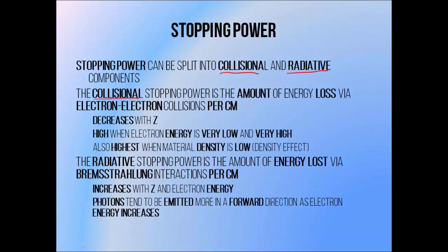The collisional stopping power is the amount of energy lost by interactions between electrons within the beam and electrons within the medium — so the amount of energy lost by hard and soft collisions. The collision stopping power tends to decrease with the material atomic number, and it tends to have a more complex variation with energy: it tends to be highest when electron energy is low or when it's very high. It also depends on the density of the material through which the beam is passing — it tends to be highest when the material density is fairly low. This is called the density effect. Briefly put, when material density is high, the charges within the medium shield the beam from each other, so electrons within the beam are only able to interact with the material across shorter distances.